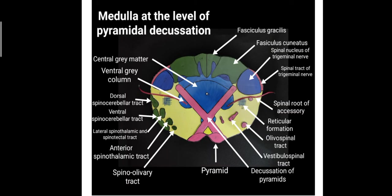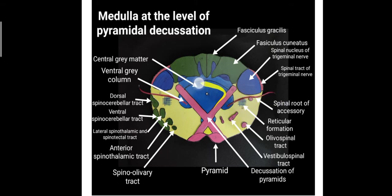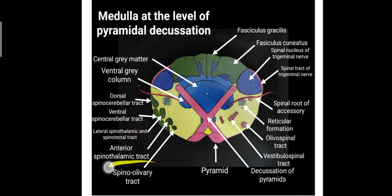Here we have the representation with the handmade model. You can see the fasciculus gracilis and fasciculus cuneatus, the spinal nucleus and spinal tract of the trigeminal nerve, the spinal root of the accessory nerve passing out from the ventral grey column, and the central grey matter. This represents the pyramidal decussation. We have the pyramids, the ventral spinocerebellar tract, lateral spinothalamic and spinotectal tract, anterior spinothalamic tract, and the spinoolivary tract.